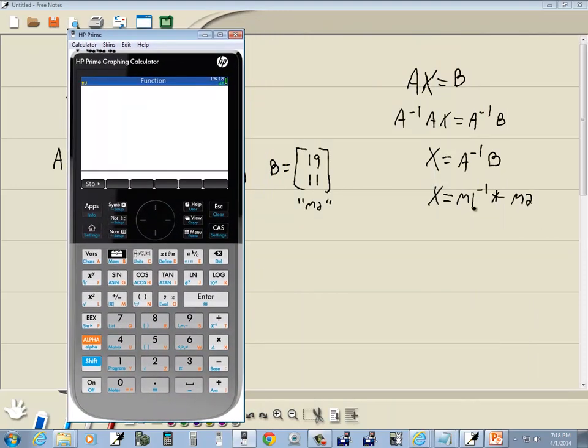And we're going to type this formula like you see it here. So we're going to take the inverse of A, M1, the inverse of M1. So we'll do alpha, x plus, or the x, the plus equals button, plus negative.